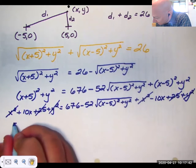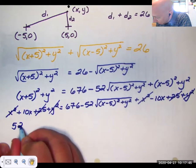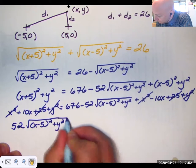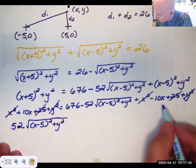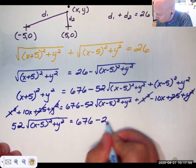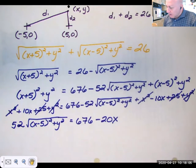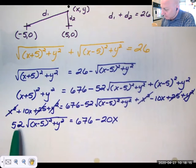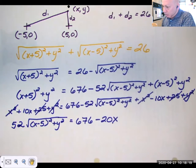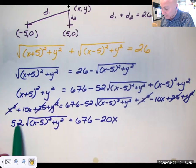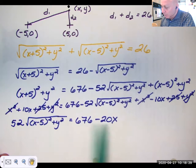I'm going to bring this 10x to the other side. And now I have to square both sides. The catch, though, is that when I square this side, this is like a times b quantity squared. We know that that's equal to a squared times b squared. So I have to square the 52 and square this radical. And then I have to foil this again.